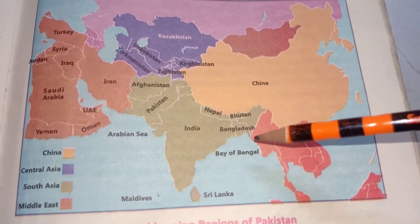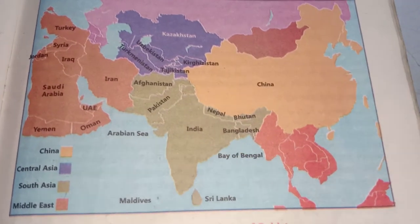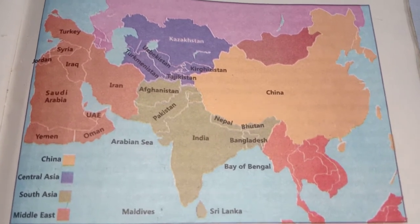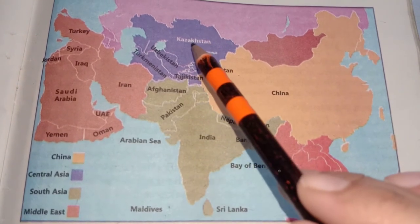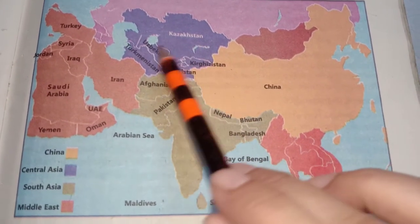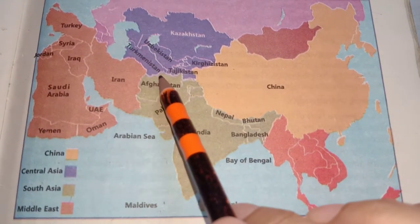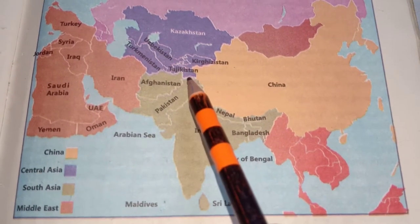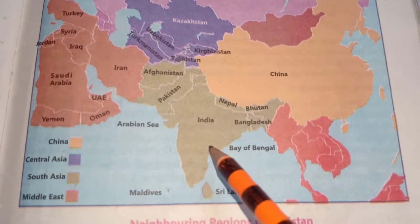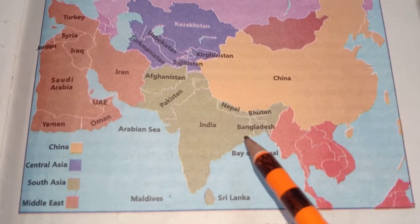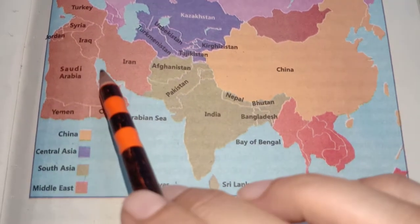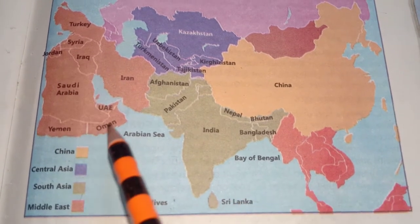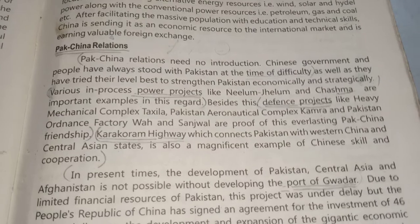You can see the map of these regions and also see the countries that lie in each region. Central Asia includes Kazakhstan, Uzbekistan, Turkmenistan, Tajikistan, and Kyrgyzstan. South Asia includes Afghanistan, Pakistan, India, Nepal, Bhutan, and Bangladesh. The Middle East includes Saudi Arabia, Iraq, Iran, Syria, Oman, and others.